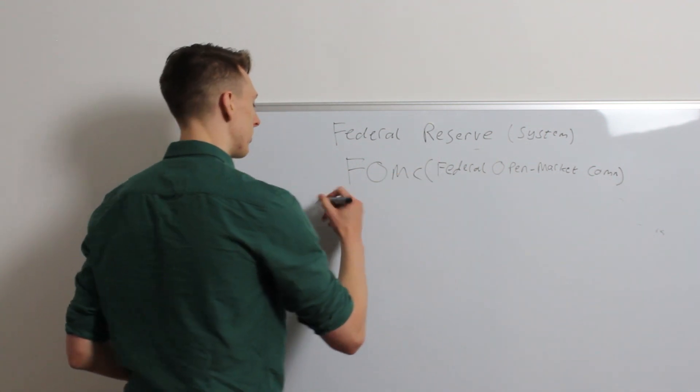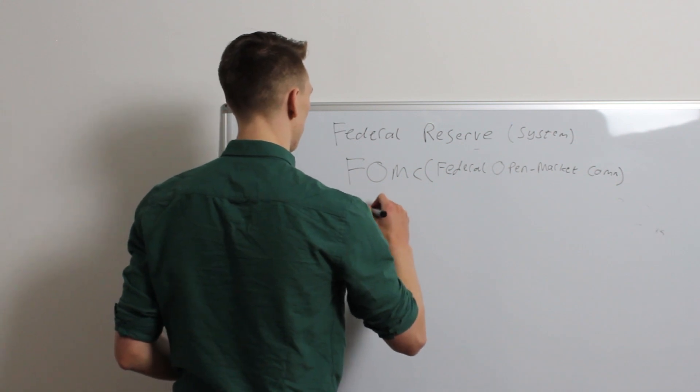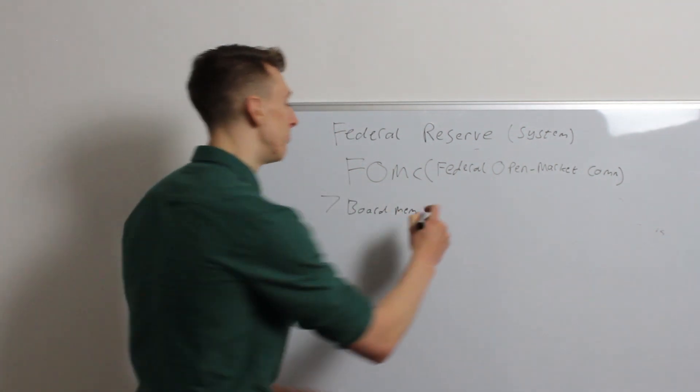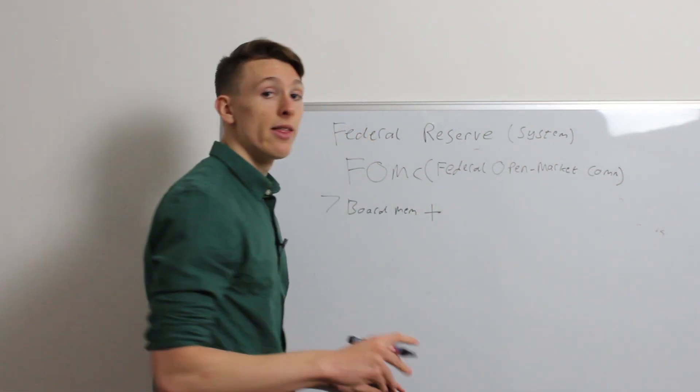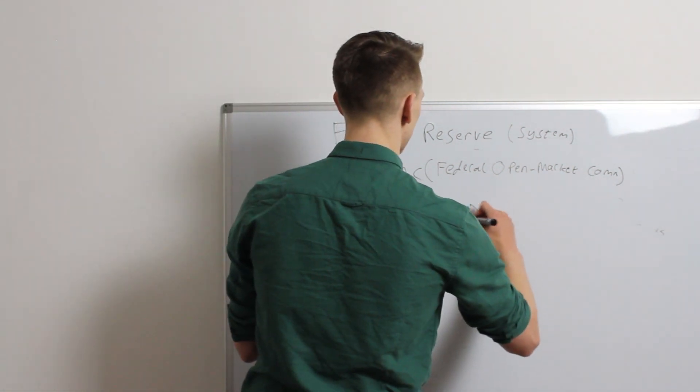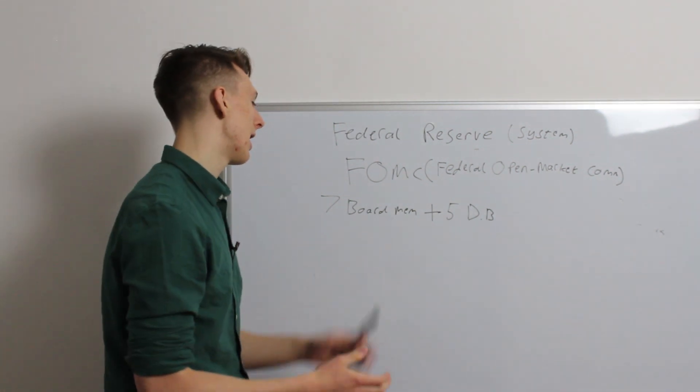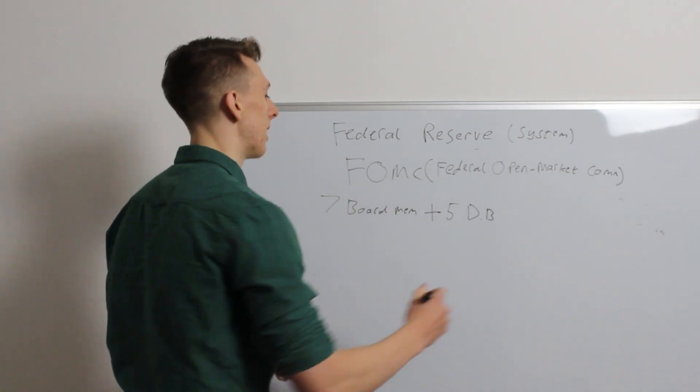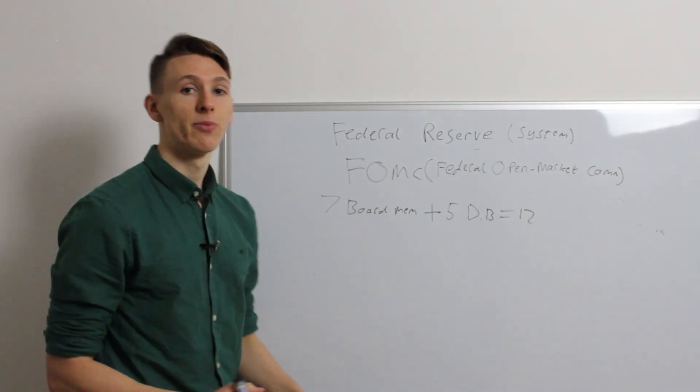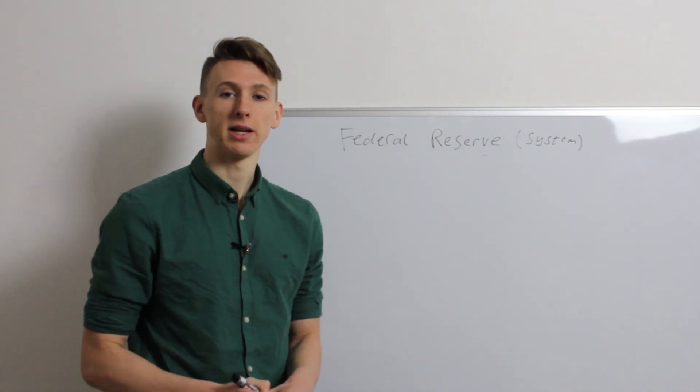So, there's the seven board members from earlier, there's seven of them, but, on top of that, there's five of those District Bank Presidents. So, there's 12 of them, five of them get selected in addition to the board members to make up a total of 12 voters in this committee. So now, these 12 members are going to be voting on what this new target rate should be.